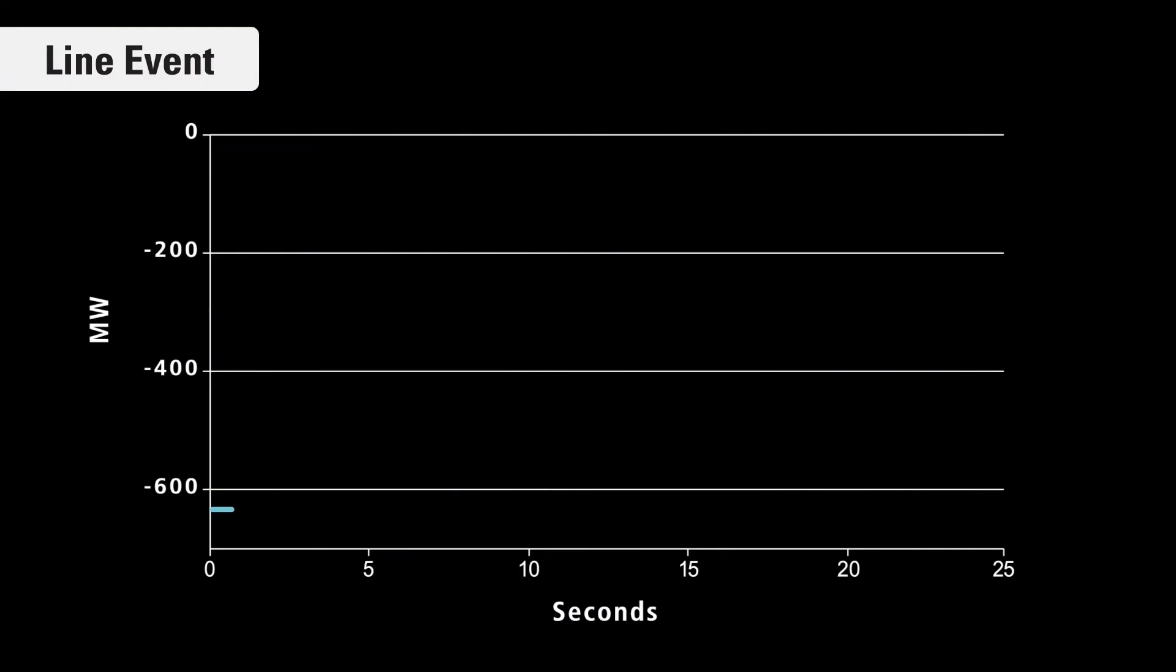In addition to the real-time applications, PJM uses synchrophaser data for model validation, which is a post-event analysis that allows us to assess whether the system performed the way that we expected. This is done for generation, load, and system dynamic models.